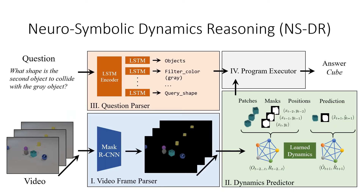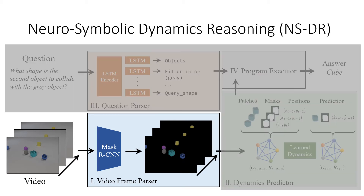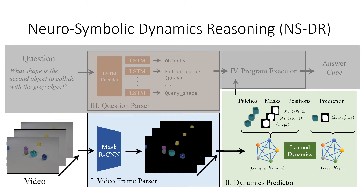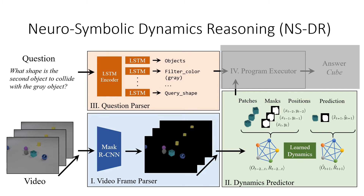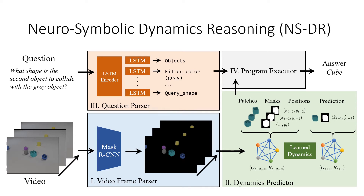Based on this observation, we designed a new model called the Neurosymbolic Dynamic Reasoner, which uses structural visual and language representation to tackle challenging causal visual reasoning tasks. Our model first parses video frames into an object-centric structural representation including position and static attributes such as color and shape of each object. We then send this representation to a dynamic model to predict object trajectories across frames using a graph neural network. The input question is parsed into a program representing its underlying logic by a sequence-to-sequence neural network. Finally, the program is executed by a symbolic executor on the predicted motion trajectory to output an answer.